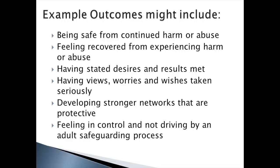It's about understanding the range of legal and social work interventions that may be used, and it is dependent on people's wishes and circumstances. Example outcomes might include: being safe from harm or abuse, feeling recovered from experiencing harm or abuse, having stated desires and results met, having their views, worries and wishes taken seriously, developing stronger protective networks, and feeling in control rather than being driven by an adult safeguarding process.